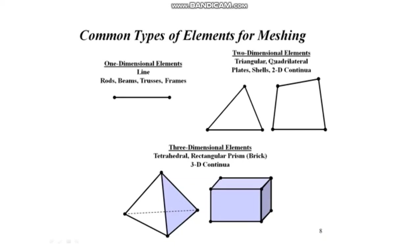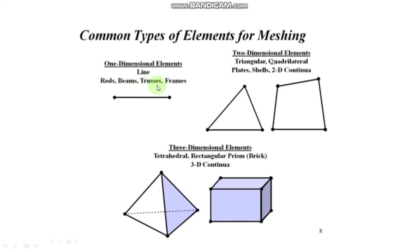Good morning students. Today's topic is common types of elements for meshing. Meshing is a very important part of FEA analysis because with the selection of type of elements, the result of the component will get varied. There are three types of elements used in the finite element method. First one is one-dimensional element, which will be used for rods, beams, trusses, frames, etc.